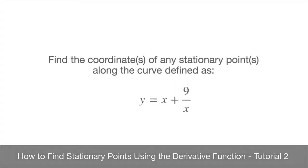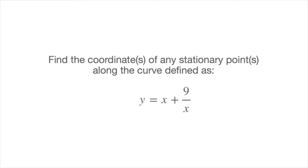In this tutorial, we look at another example showing how to find the stationary points along a curve's length. The reason I've chosen this example is because this type of function is quite frequent in exam questions. It's therefore very useful to know how to solve this type of question. We're told to find the coordinates of any stationary points along the curve defined as y equals x plus 9 over x.